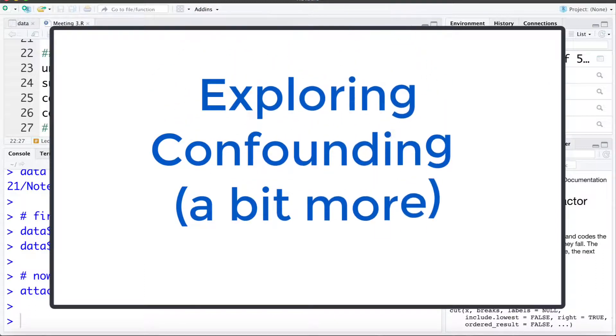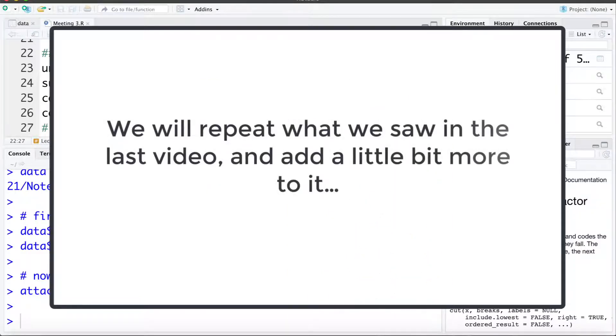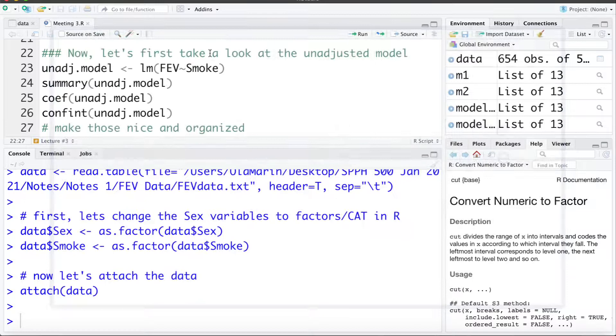In this video we're going to explore the idea of statistically adjusting for a confounder. We've already discussed the concept of confounding and explored the idea of confounding in this data set a little bit, but now we're going to look at it numerically and a little bit more than we did previously.